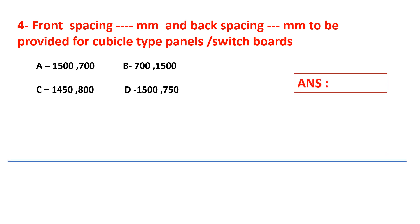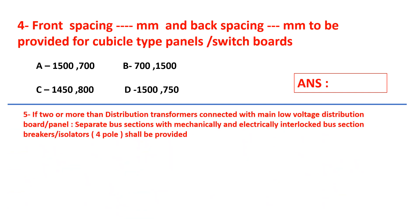Question number 5: If two or more distribution transformers are connected with a main low voltage distribution board panel, a separate bus section with mechanical and electrical interlocked bus section breakers or isolator 4-pole shall be provided. True or false?